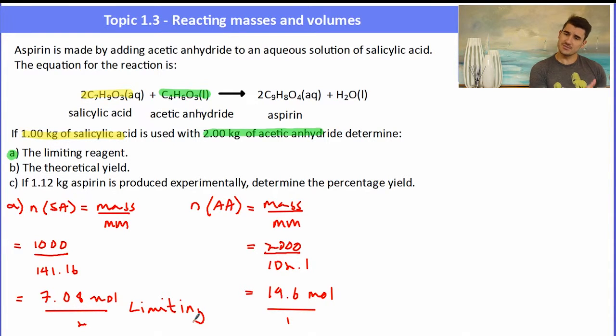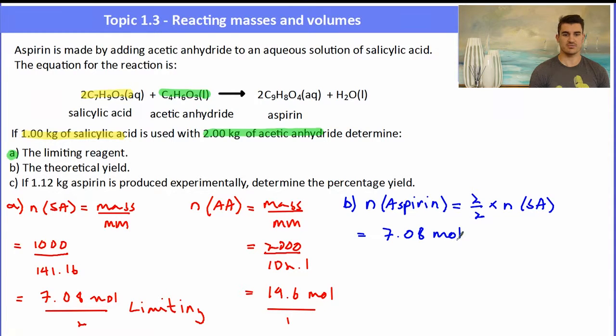We use the limiting, the number of moles of the limiting, to work out our theoretical yield. We use the number of moles and the ratio between that and aspirin. So the number of moles of aspirin will be two (the thing that you want) over two (the salicylic acid) times the number of moles of salicylic acid. That ends up being the same number of moles - all the moles of salicylic acid transferred to the number of moles of aspirin, so we would get 7.08 moles of aspirin produced.